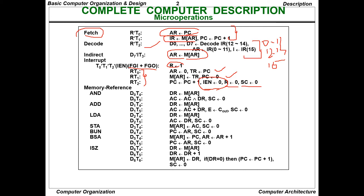For memory reference instructions: AND — DR ← M[AR], SC=0, AC ← AC ∧ DR. ADD — DR ← M[AR], SC=0, Cout goes to E, AC ← AC + DR. LDA loads the accumulator. STA, BUN, BSA, and ISZ have been covered in previous classes. These are all the memory reference instructions.